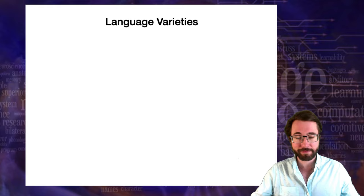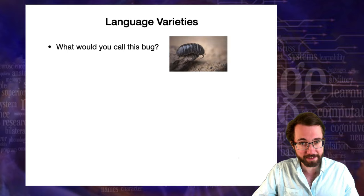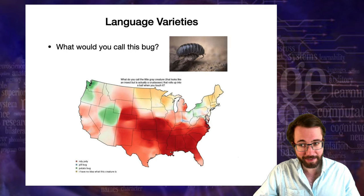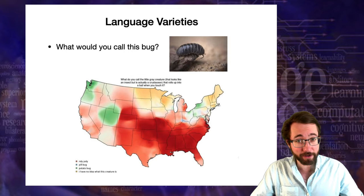Here's another example. What do you call this bug — this little guy right here? Let me know in the comments. If you grew up in California, you probably call it a roly-poly. In the areas of the United States marked in red, you'd call it a roly-poly. In the green areas, you might call it a potato bug. In the very small blue areas, you might call it a pill bug.